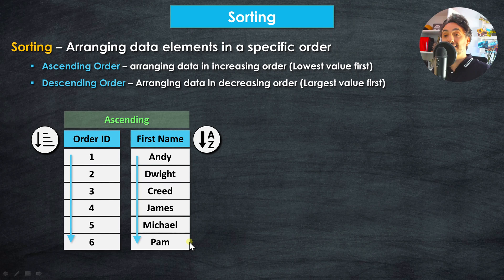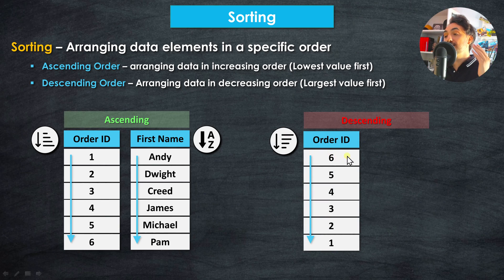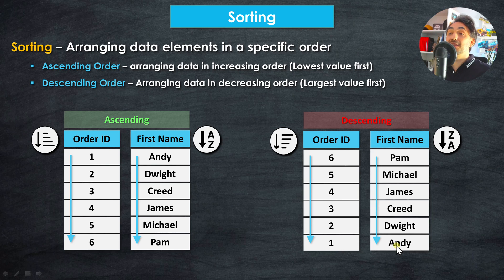The second option is descending order, where we arrange data in decreasing order — starting with the largest value and moving to the lowest. For example, with order IDs it would be six, five, four going down. For first names it's the reverse of alphabetical order, starting with Pam, Michael, James, until we end with Andy. So we have only two options: ascending or descending.